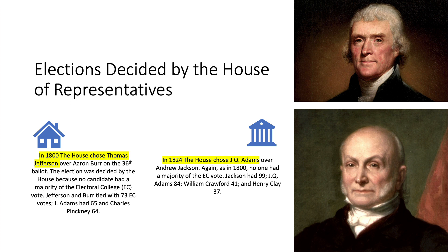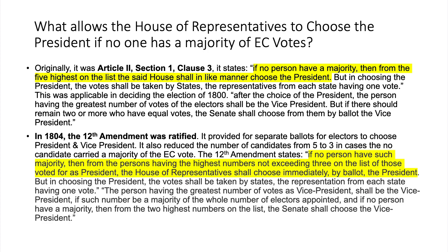In 1824, the House for the second and so far last time chose John Quincy Adams over Andrew Jackson. Again, no one had a majority of the electoral college vote. Jackson had 99, John Quincy Adams 84, William Crawford 41, and Henry Clay 37. The House chose John Quincy Adams, and Jackson was obviously very disappointed.